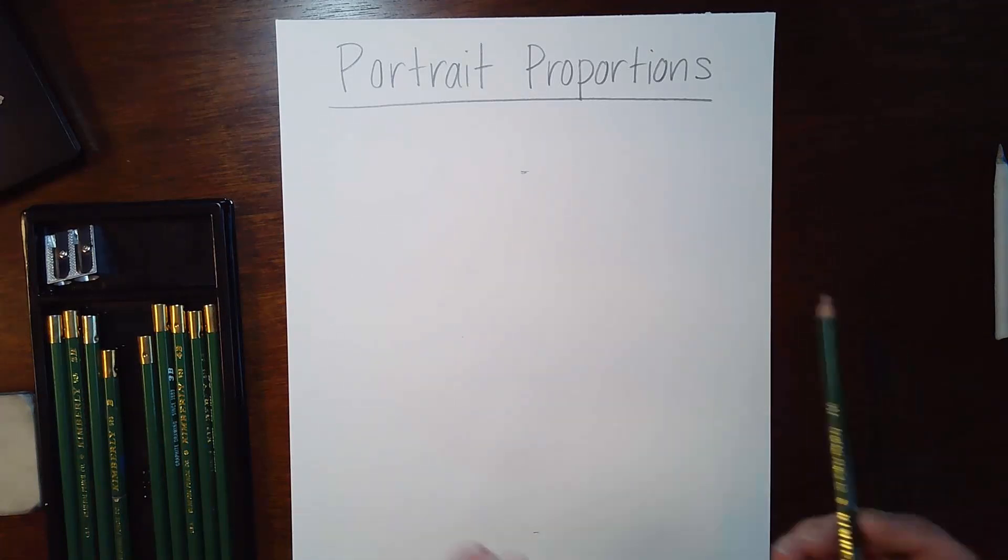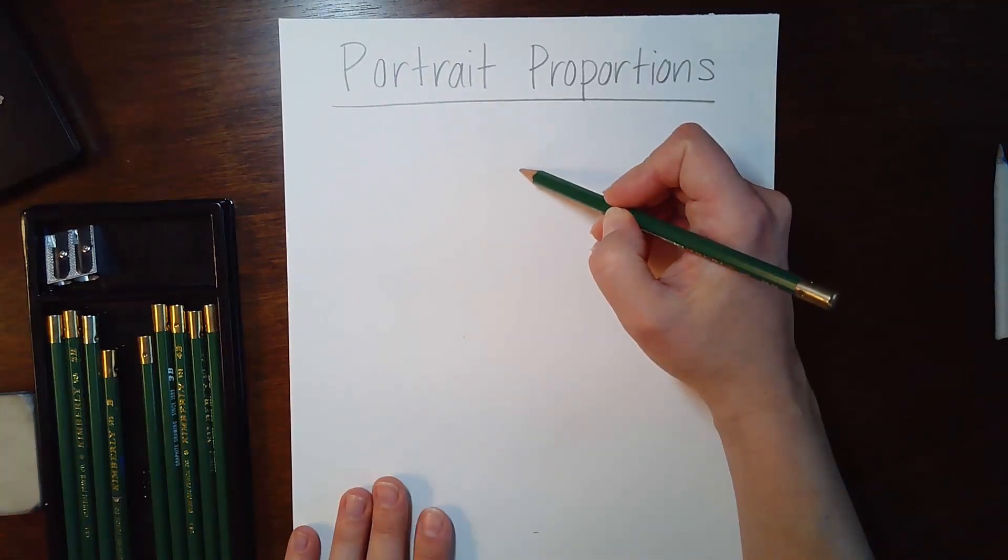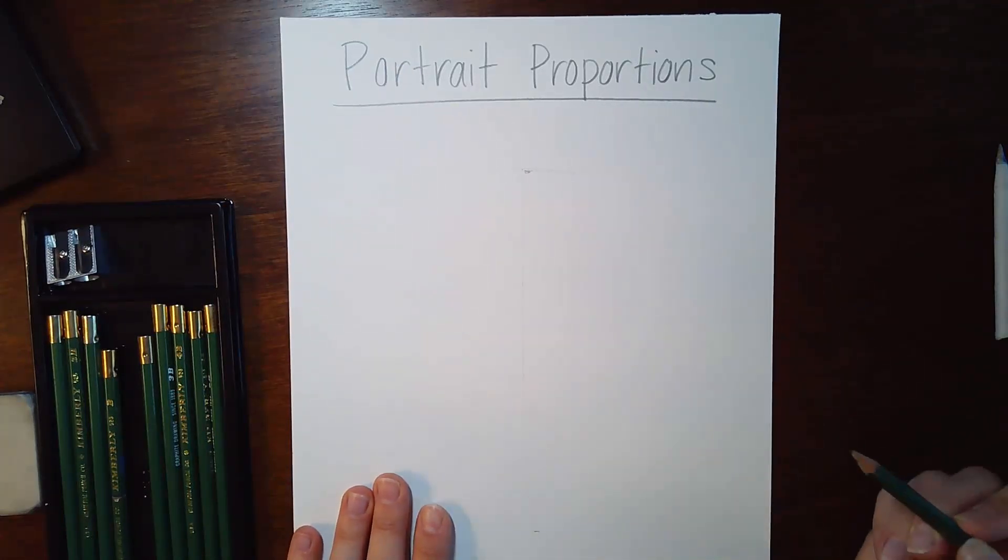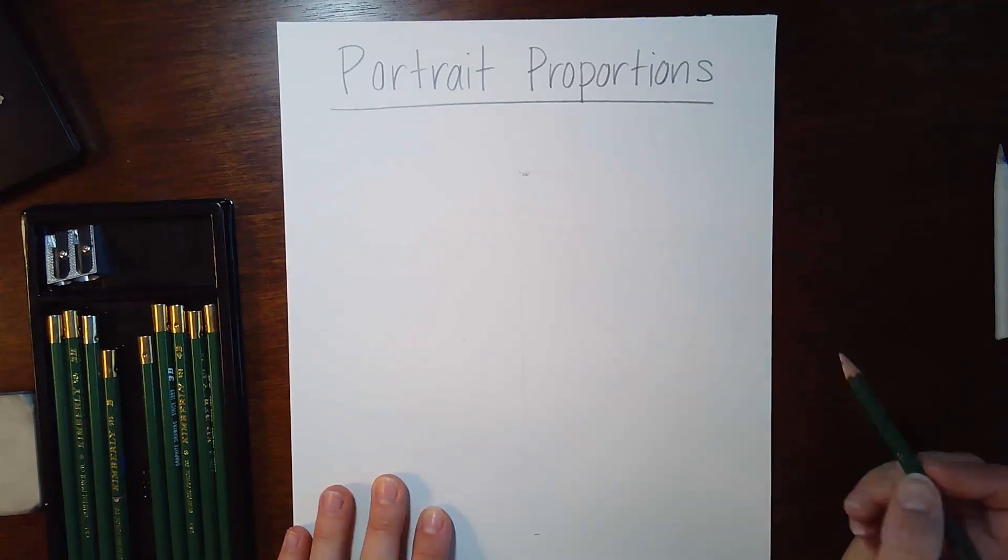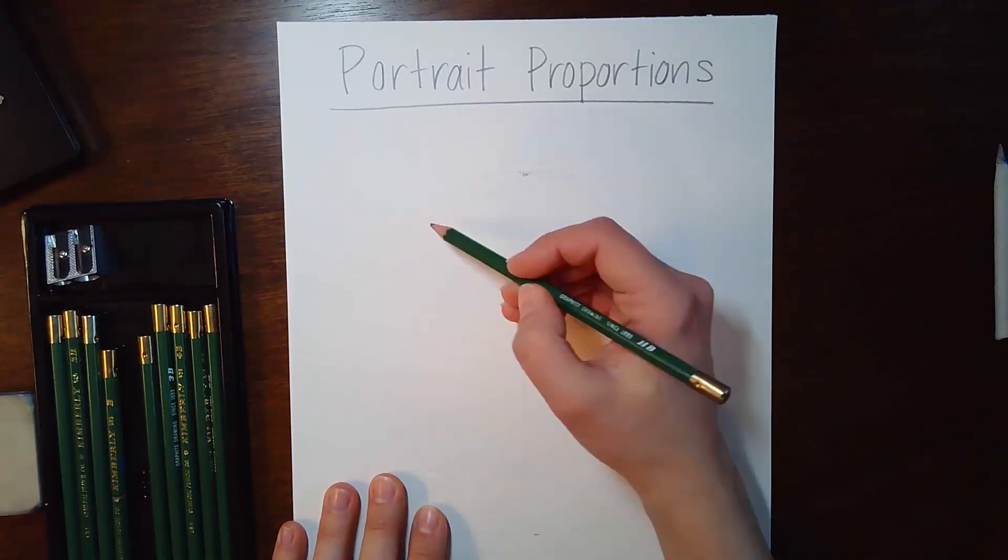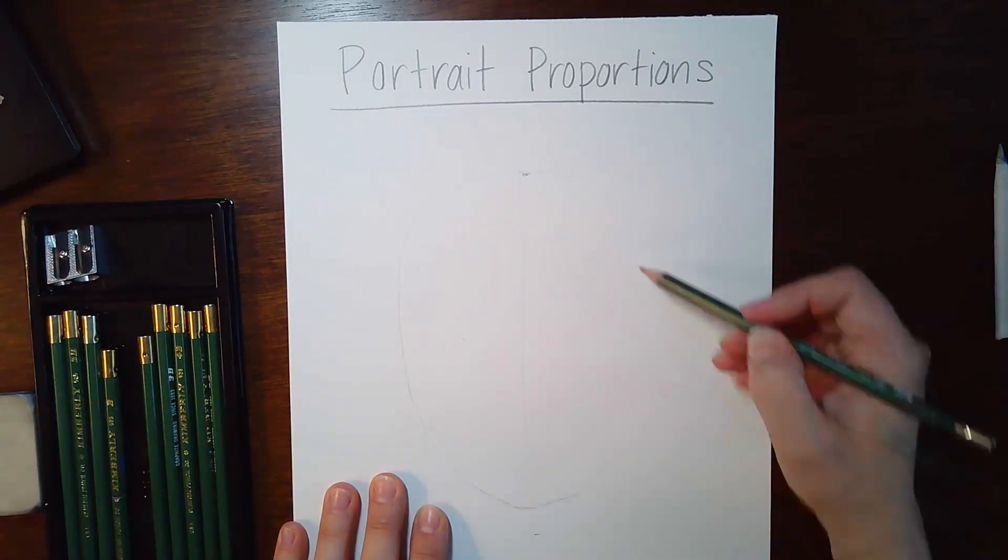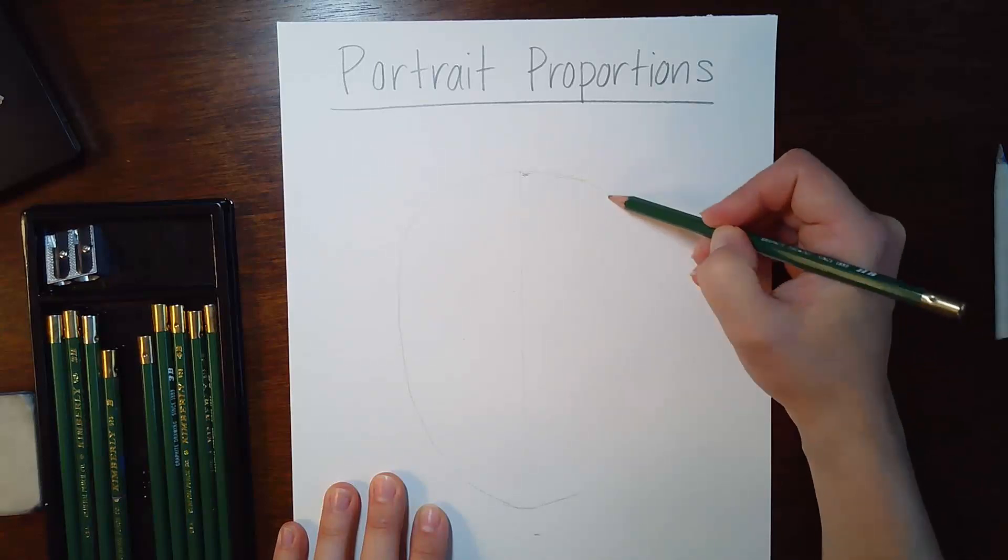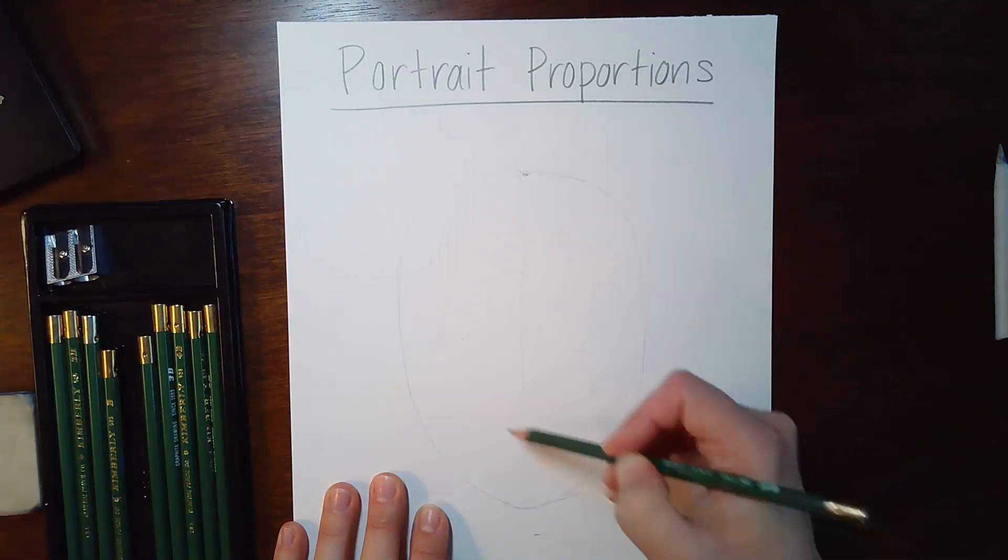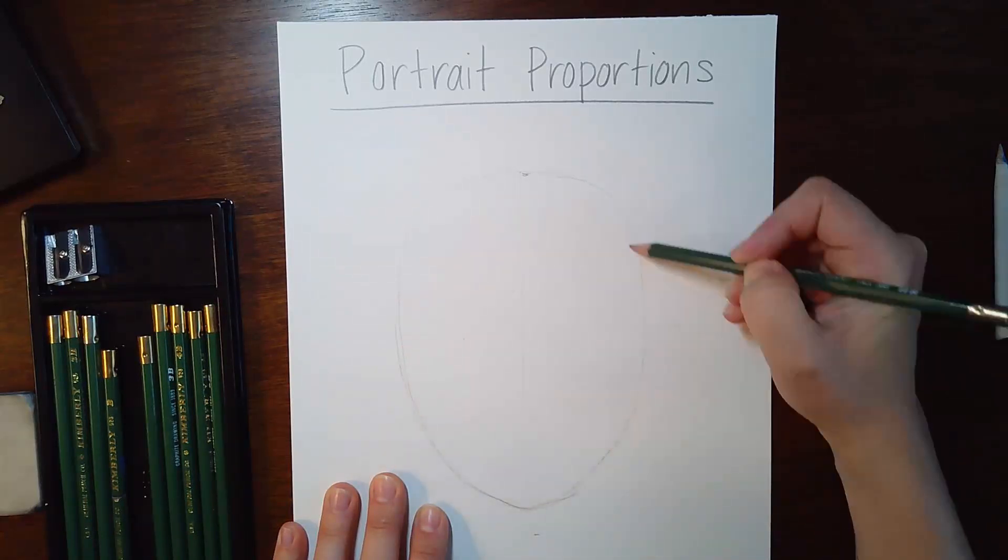And then every person has a unique head shape and we are symmetrical. So if you lightly draw a vertical line, so light you can barely see it, one half of the face is typically about the same as the other side. No human being is exactly symmetrical. We all have some slight differences between our left and our right side. And some people's chins are slightly different.